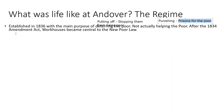After the 1834 Amendment Act, workhouses became central to the new poor law because the government thought it would be a better system than outdoor relief. The problem with the workhouses straight away was that they were very expensive — expensive to run, expensive to build, and you had to keep the people inside fed, clothed, and provided with work. This was going to cause big problems.